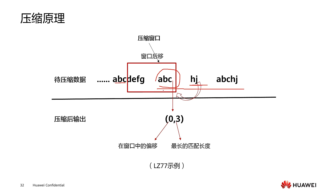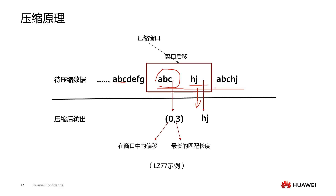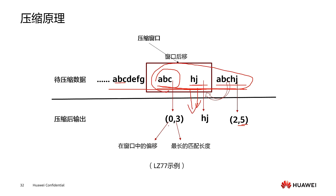The window then moves backward. For the string H, J to be compressed, comparing it with the window finds no duplicates, so H, J is output directly. The window continues to move back, and comparing the string ABC, H, J with the window finds that ABC, H, J is duplicated, with a longest match length of 5. The compressed output is just an index record, much smaller than the real data. This demonstrates how compression reduces storage space.